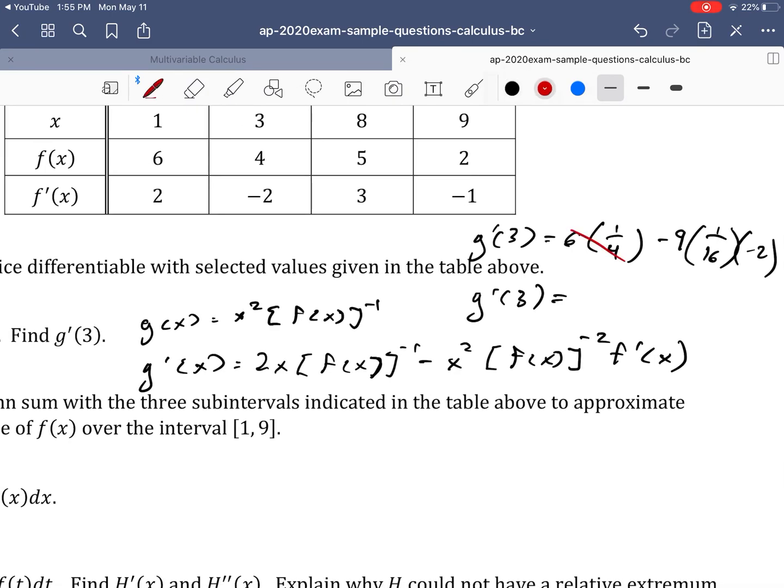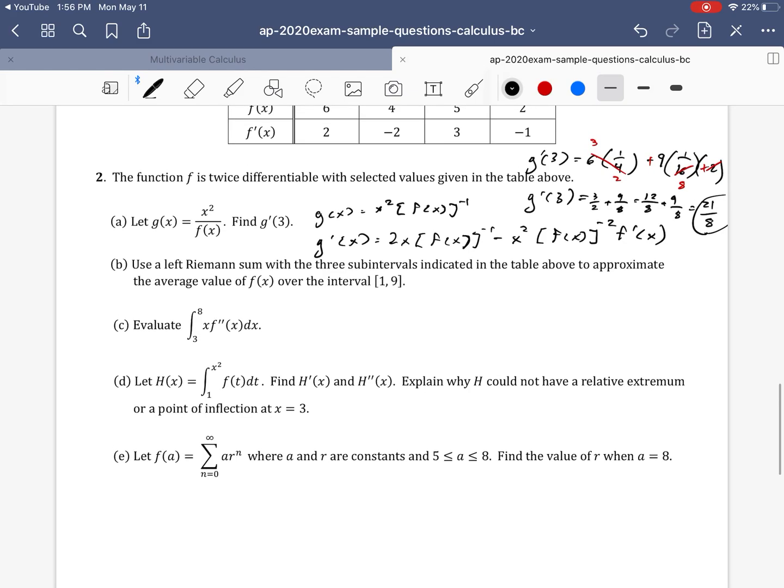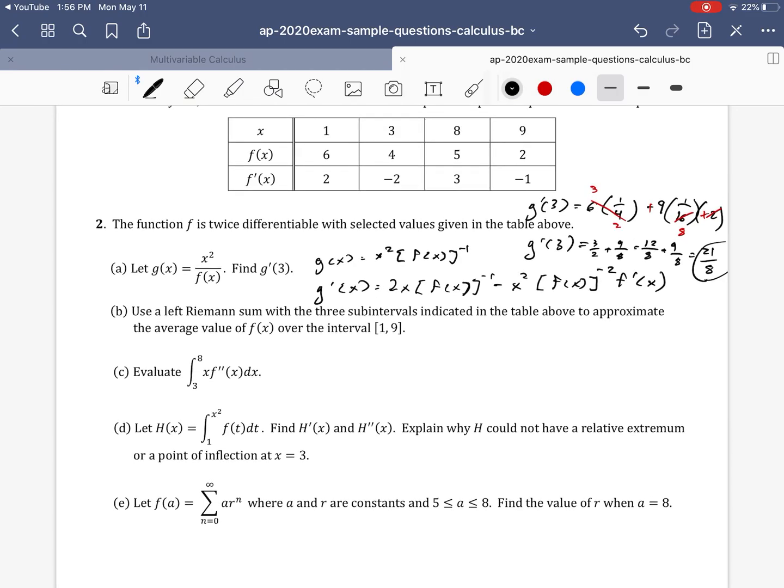So we now get g prime of three to be, now we just need to do some simplifying here. So six over four, that's the same thing as three over two, and we have a minus, we have a negative times a negative, so I'm going to make that a plus and a plus there. Two and sixteen, that goes in with an eight there. So we have three halves plus nine eighths, multiplying that first one by four. I get 12 eighths plus nine eighths, which is 21 eighths. And that's my answer for part A.